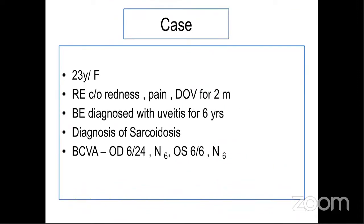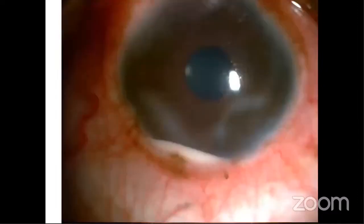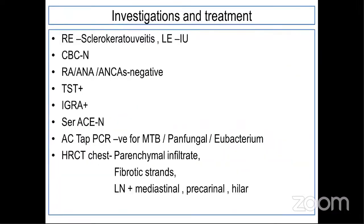Coming to my next case: a 23-year-old female presented with redness, pain, and dimness of vision for two months in both eyes. She had been diagnosed with uveitis for six years and diagnosed as a case of sarcoidosis. Her best-corrected visual acuity in the right eye was 6/24 N6, and left eye was 6/6 N6. This was a very angry eye — the patient was extremely symptomatic — with diffuse congestion of the deep episcleral vessels with scleral edema, multiple nodules, corneal scars, and a hypopyon of almost 2 mm.